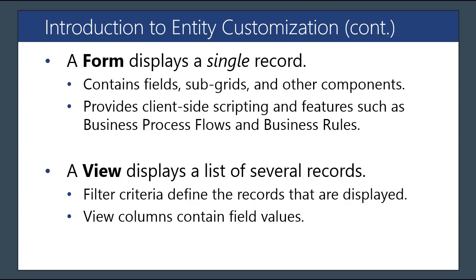A form is a visualization of a single record. It displays information from a single entity record and allows users to add, update, or modify information. Related information displayed within a form is called a subgrid. A view, on the other hand, allows you to display a list of records from an entity — for example, a list of contacts. You can filter the information in a view and control which columns are presented.